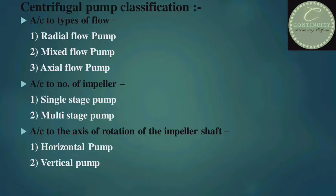Now we will know about the classification of centrifugal pumps. According to type of flow: first, radial flow pump; second, axial flow pump; and third, mixed flow pump. According to number of impellers: first, single stage pump; and second, multi-stage pump. According to the axis of rotation of the impeller shaft: first, horizontal pump; and second, vertical pump.